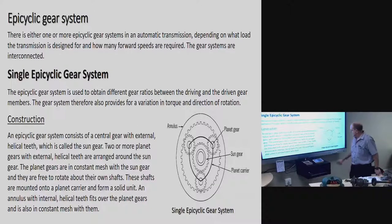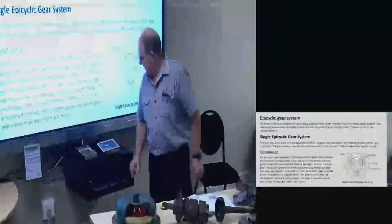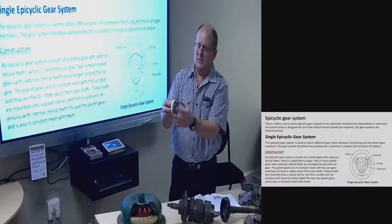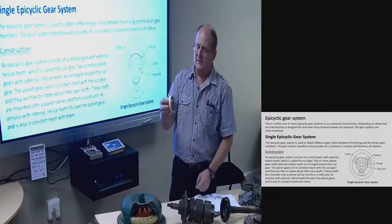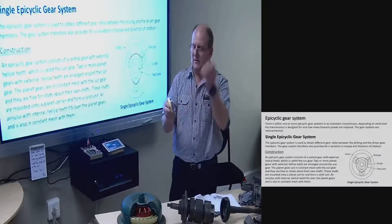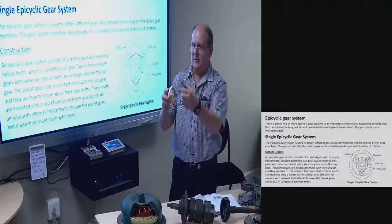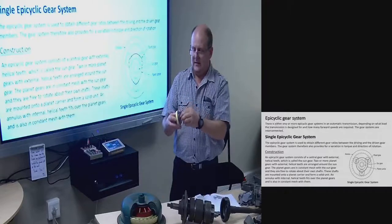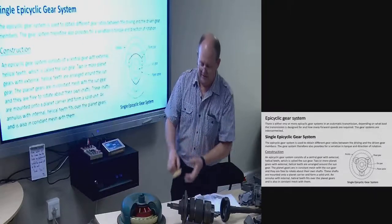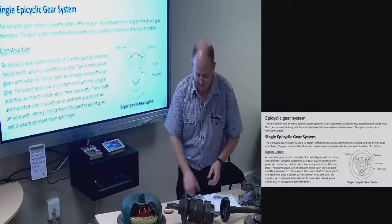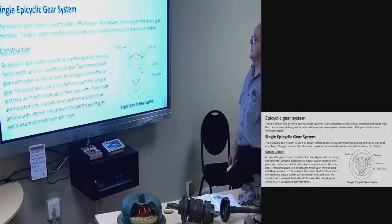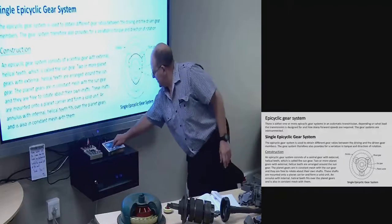Infinite gear ratios: the torque converter provides an infinite number of ratios of up to two to one, providing a smooth flow of power that automatically adjusts to varying load conditions. Advantages: torque increases automatically, torque is transferred smoothly and reduces shock to the gearbox, the chassis and the vehicle wheels. Minimum servicing is required.